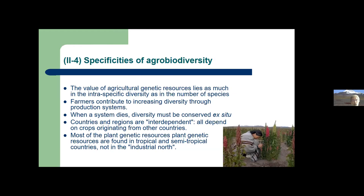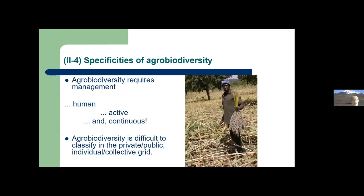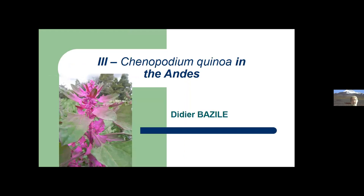The value of agricultural genetic resources lies as much in intraspecific diversity as in the number of species, and farmers contribute to increasing diversity through their production systems — but when the system dies, diversity must be conserved ex situ. Countries and regions are interdependent; all depend on crops originating from other countries, and most plant genetic resources are found in tropical and semi-tropical countries rather than the industrial north. To maintain agrobiodiversity, active and continuous human management is required, making it important to involve farmers and farm organizations in this work.